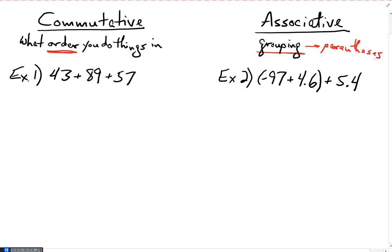Let's take a look at how we could use the commutative property of addition and the associative property of addition to simplify an expression that we're trying to evaluate. Take a look here at example number one. I've got 43 plus 89 plus 57.